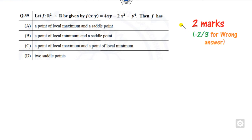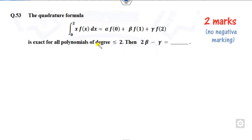Question number 39 is of two marks and is related to maxima, minima, local maxima, and saddle points. Question number 53 is related to numerical methods and the quadrature formula where you have to find the coefficients alpha, beta, gamma and the corresponding relation. Both questions are worth four marks total and you can solve them within two minutes.